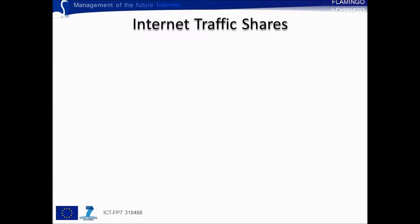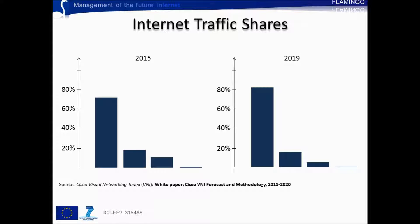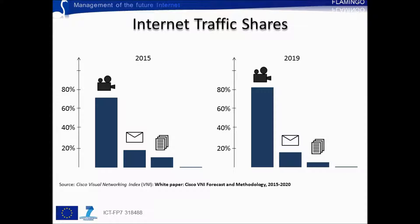To understand why specific infrastructures are needed to deliver video content, let's first have a look at the distribution of traffic in the Internet today. The two graphs, which were produced based on the statistics made available by the Cisco Visual Networking Index white paper for the period 2015 to 2020, show Internet traffic shares over four categories in 2015 and 2019 respectively. As we can see, Internet traffic today is largely dominated by video content, and this predominance is expected to continue growing, with video traffic reaching a share of 80% by 2019. Video traffic is followed by data such as email, which will account for around 15% of total traffic, file sharing traffic, and finally online gaming, which despite its small contribution compared to the overall traffic constitutes a market in constant expansion.